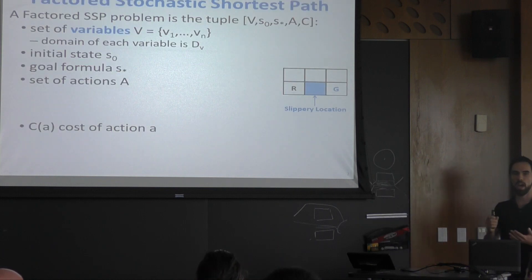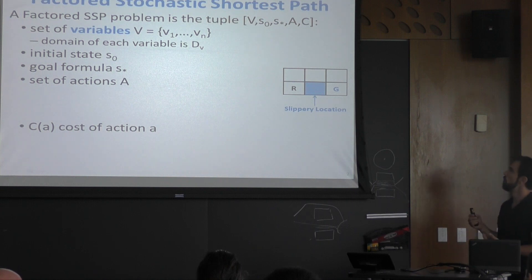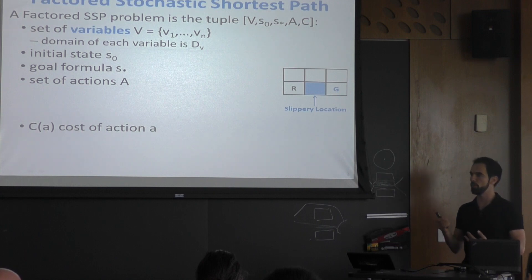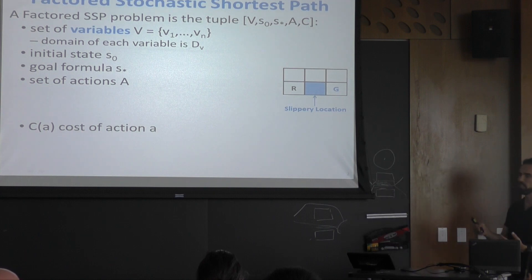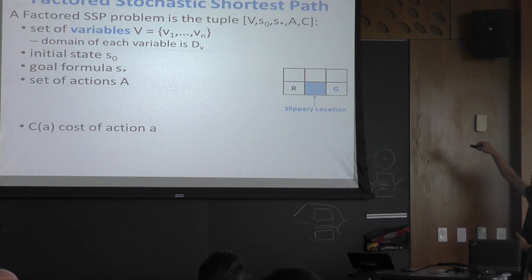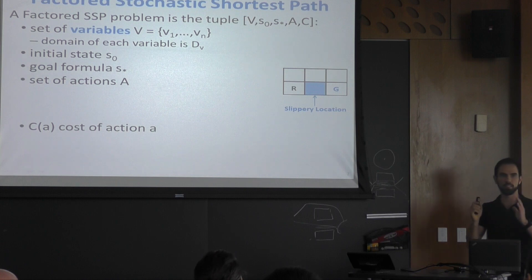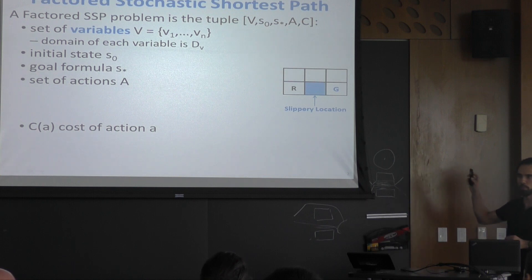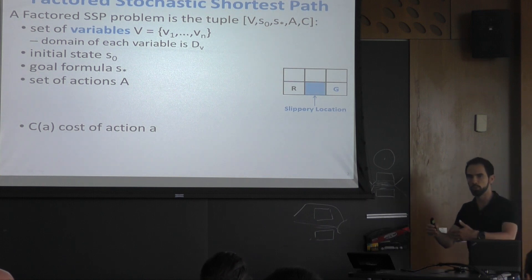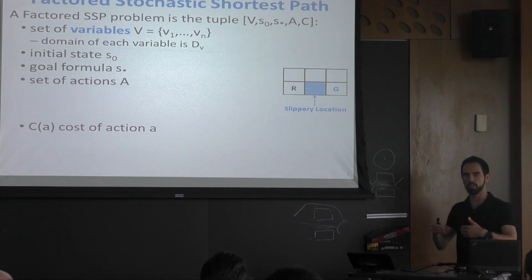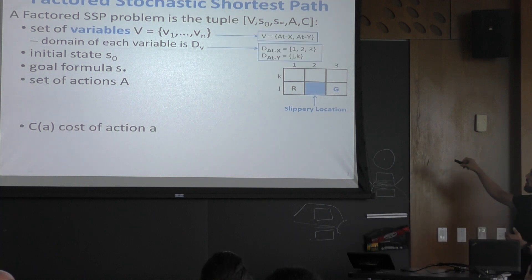Our setting is a probabilistic planning problem with goals — we can think about MDP with goals. We're going to use factored representation; if you're aware of SAS+, it's going to be a probabilistic version of SAS+. I'll present this using a running example: a little robot that wants to move inside a grid, moving in any direction. These are deterministic actions with no probabilities, except in a slippery location. In that slippery location, with probability 0.9 the robot will fail and stay there, and with probability 0.1 it moves.